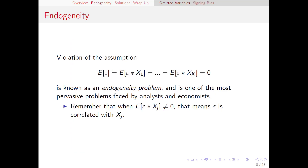Returning to our assumptions, remember that we needed the expectation of epsilon, the error term, to be zero and also for the error term to be uncorrelated with all of our explanatory variables in the equation. That is, x1 is uncorrelated with epsilon, x2 is uncorrelated with epsilon, and so on. If that is not true — that is, any of our x's are correlated with epsilon — that is what we call an endogeneity problem. And that breaks our ability to establish causality in the model.